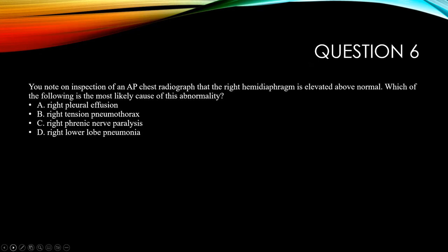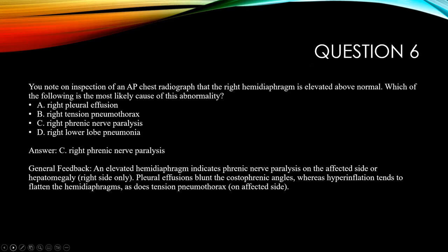Question six: you note on an AP chest radiograph that the right hemidiaphragm is elevated above normal. Which of the following is the most likely cause? A, right fluid effusion; B, right tension pneumothorax; C, right phrenic nerve paralysis — remember the phrenic nerve emanates from C3 through C5 and innervates the diaphragm; or D, right lower lobe pneumonia. The correct answer is C. An elevated hemidiaphragm indicates phrenic nerve paralysis on the affected side, or hepatomegaly. Pleural effusions blunt the costophrenic angles, whereas hyperinflation and tension pneumothorax tend to flatten the hemidiaphragms.